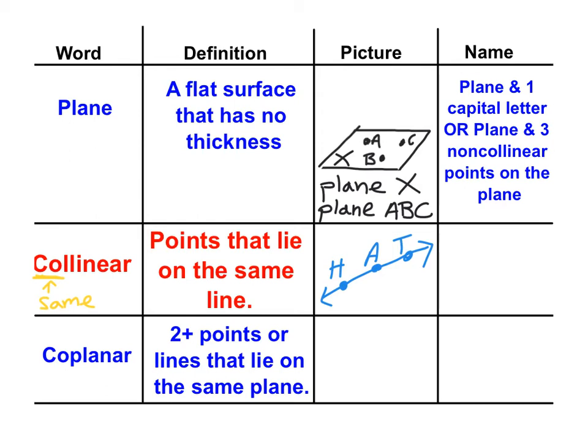And I am going to place three points on my line. Let's call the points H, A, and T. So we could say that H, A, and T are collinear. So there are three points that are on the same line.